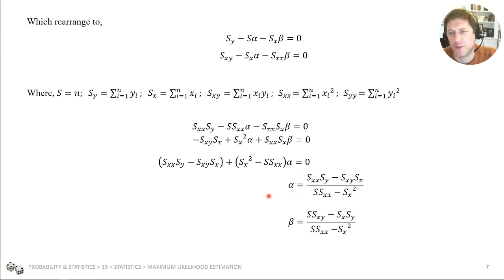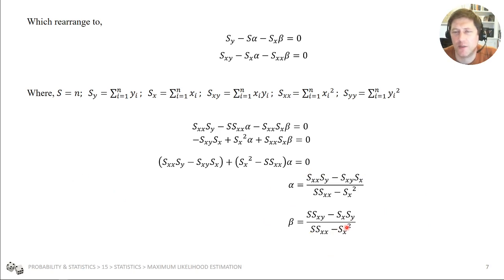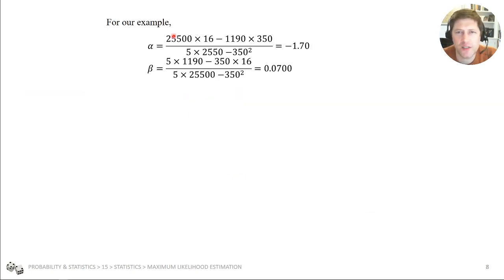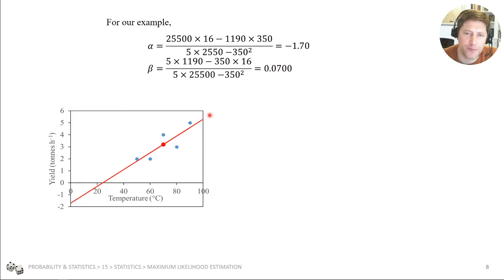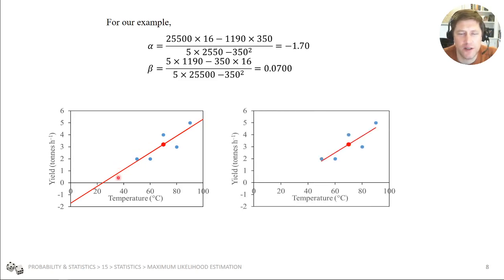Once we have alpha we can substitute back in to get an expression for beta. You've probably seen these types of equations before to fit a gradient and intercept, but now you can see the method by which they were derived — and by knowing the method you can change it for a different situation. For our example, putting in our numbers we get alpha is minus 1.7 and beta is 0.0700 — that's the gradient. We can plot that best-fit line, and Excel will do that automatically; it has a LINEST function to calculate these parameters.